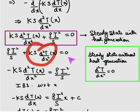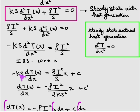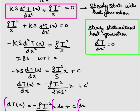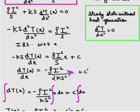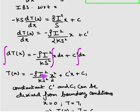Taking the source term to the right-hand side and integrating both sides with respect to x gives: -K·(dT/dx) = rho·I²·x/s + C, where C is a constant of integration. Integrating again with respect to x gives: T = -rho·I²/(K·s) · (x²/2) + C'·x + C1.